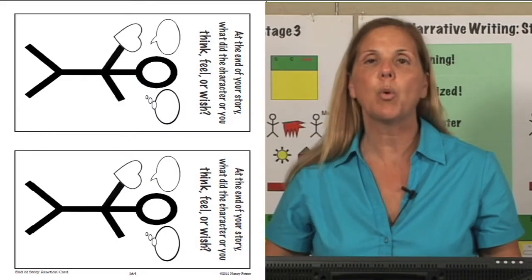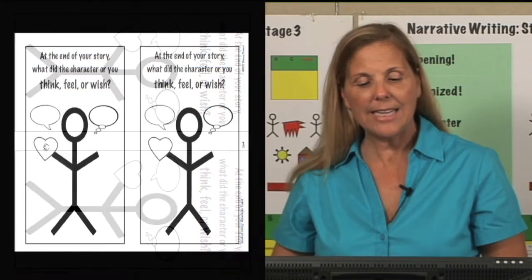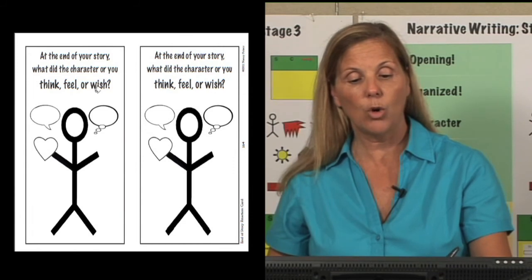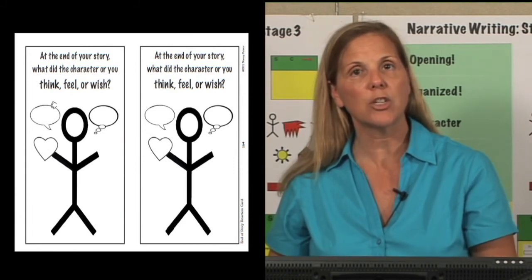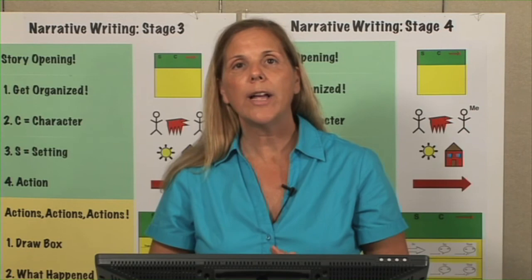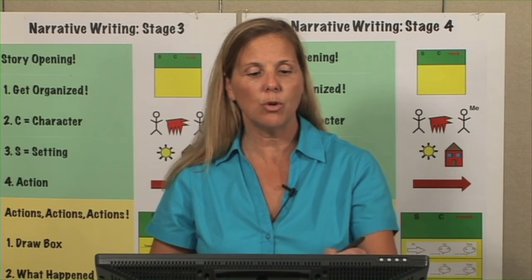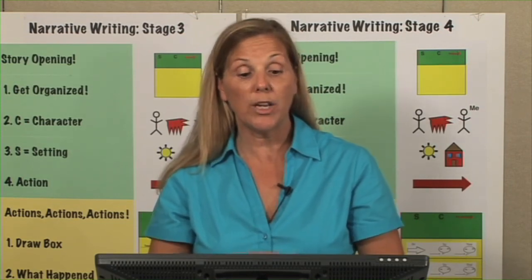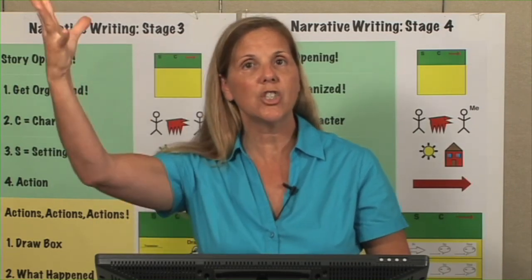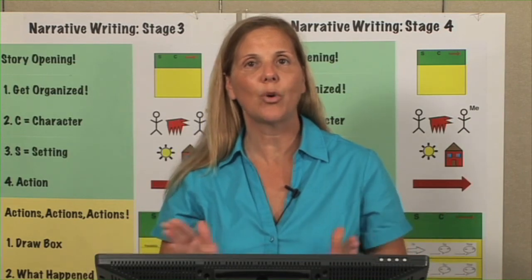The final page of tools is when we have our story closing. This is a nice visual you can show the children. At the end of the story, what did your character think, there's our thinking bubble, feel, there's our heart, or wish, there's our dialogue bubble where they say what they wished. Now you have the different ways to say the end of the story. In the end, after that, once, looking back, soon, finally. These are some ways to start that sentence. Then you choose your dialogue bubble, your heart, or your thinking bubble. Wish, think, feel. Those are some ways to have that story closing.